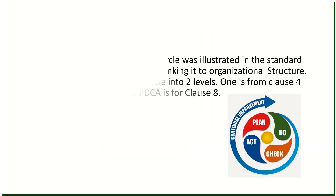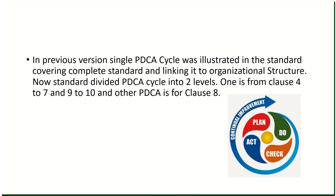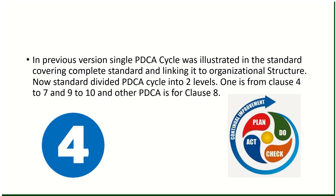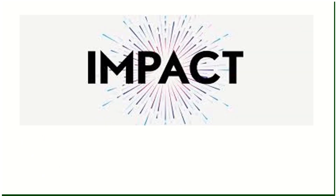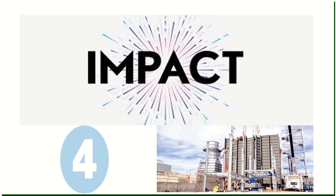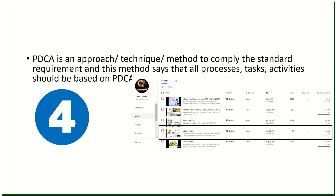Change number four: previously a single PDCA cycle was illustrated covering the complete standard. Now the standard divides the PDCA cycle into two levels — one covering clauses four to seven and nine to ten, and another for clause eight. Impact: just remember that PDCA is an approach, a technique, a method to comply with standard requirements, and all processes, tasks, and activities should be based on PDCA. No such impact on industries already compliant with ISO 22000:2005.